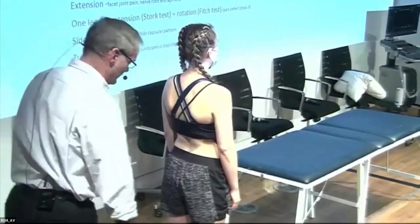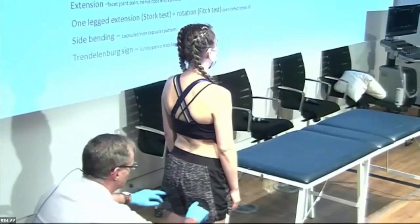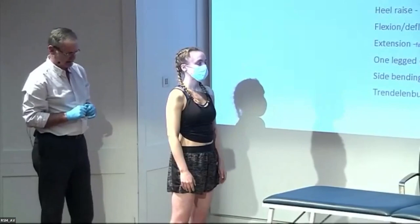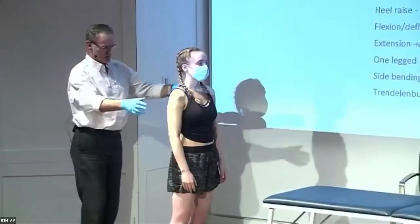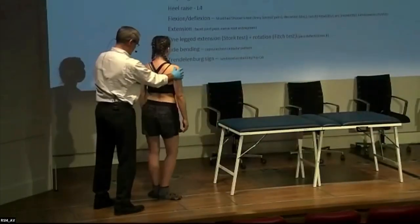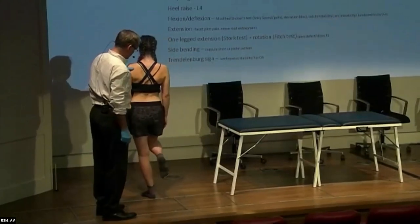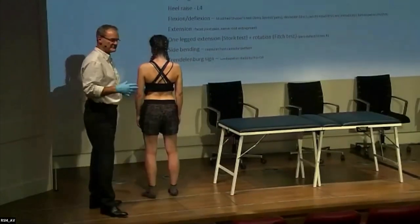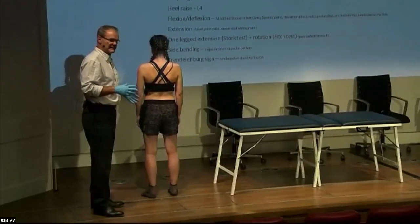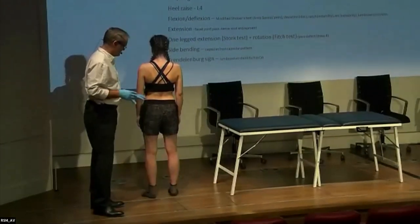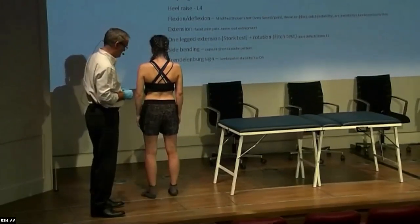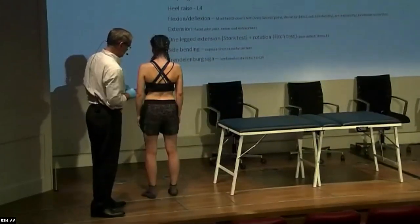While standing, I also look at the popliteal heel creases and buttock creases, checking for symmetry and leg length discrepancy. Trendelenburg's test — stand on one leg. I'm looking for weakness of the abductors: on the left side, if the pelvic level drops down to the right, this suggests weakness of the hip abductors on the left or hip joint pathology.